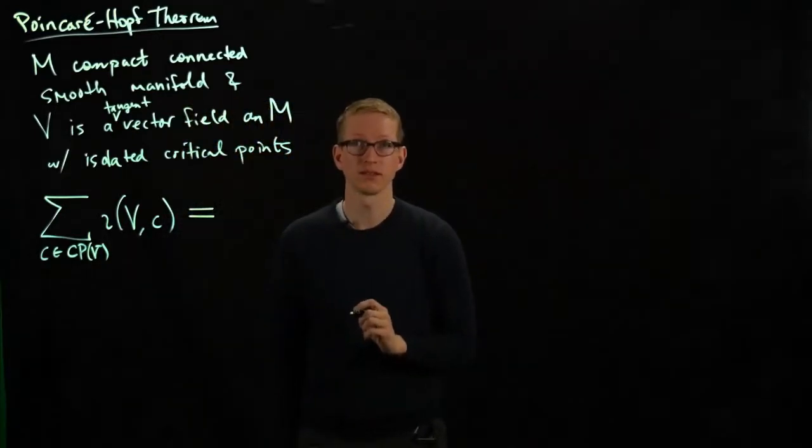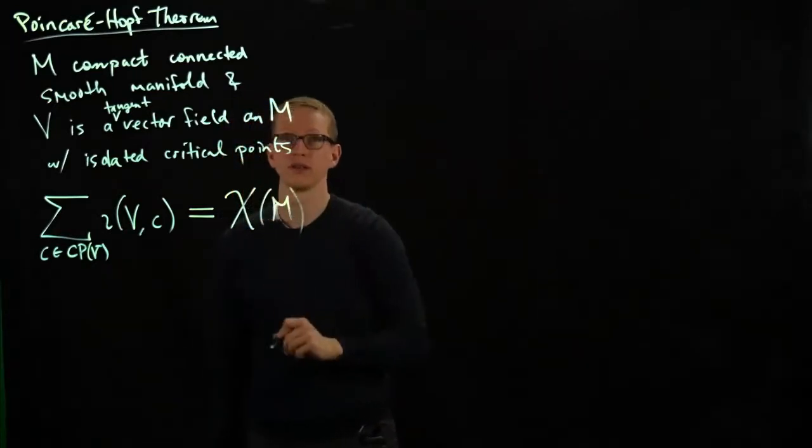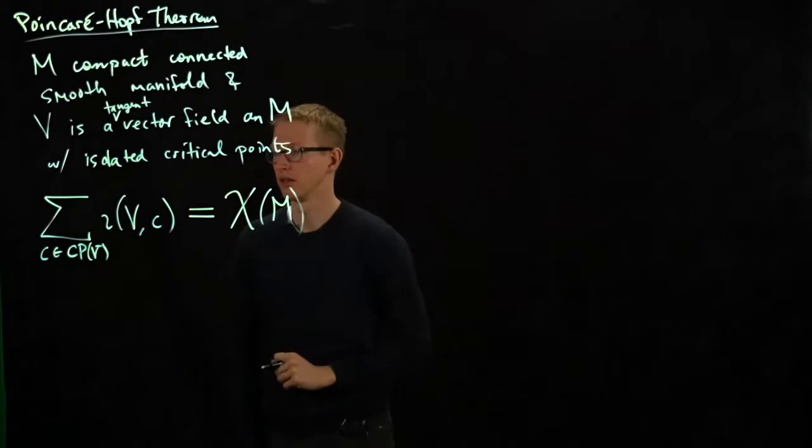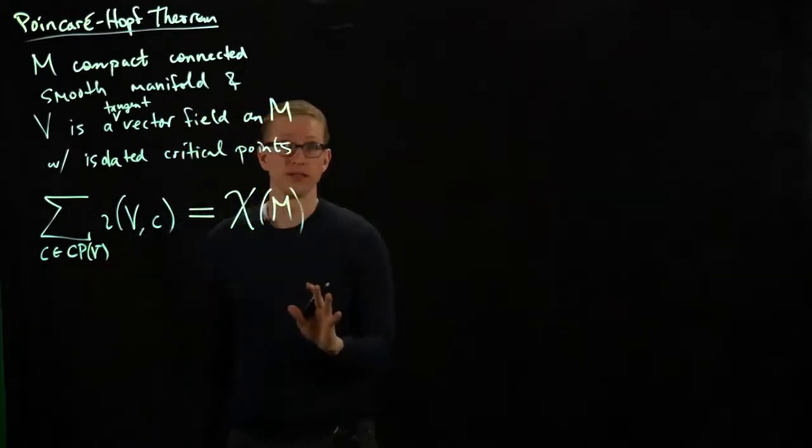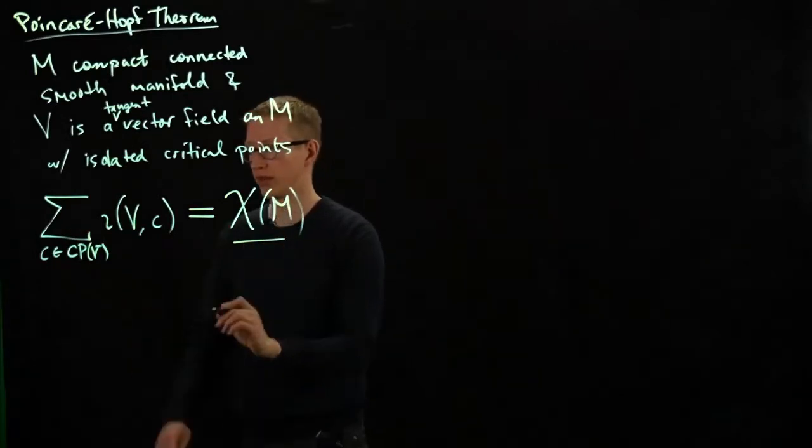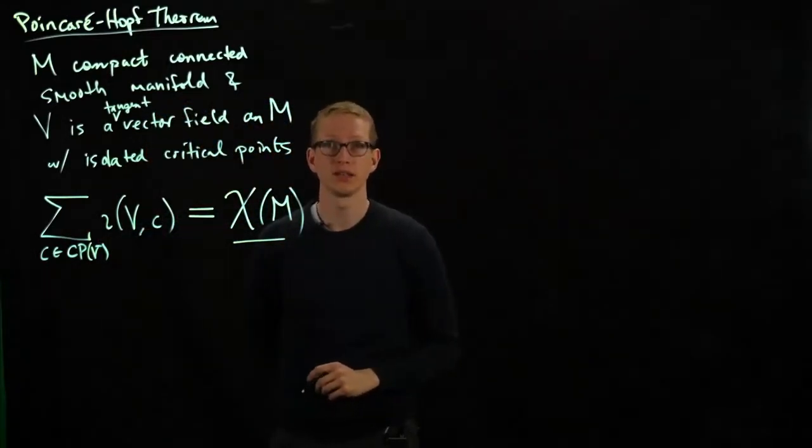This sum of indices equals the Euler characteristic of M, which is really surprising for at least several reasons. First of all, we know the Euler character— actually even before that, this depends on a vector field. There's a vector field on the left-hand side of this equation.